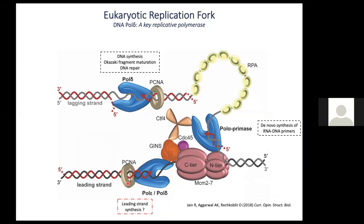This slide shows a schematic of the eukaryotic replication fork, which is composed of 200 or more proteins that work together to ensure that genomic DNA is synthesized and repaired with high fidelity. The main players are the three replicative polymerases shown in blue: Pol alpha, Pol delta, and Pol epsilon — multi-subunit polymerases belonging to the B family. Pol alpha synthesizes de novo short RNA-DNA primers, which are then extended on the lagging strand by Pol delta.